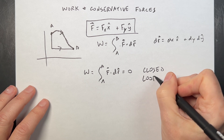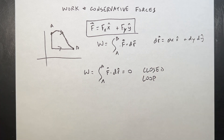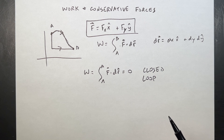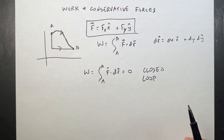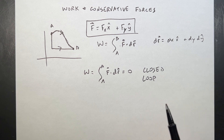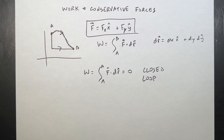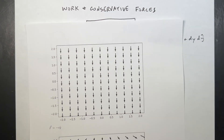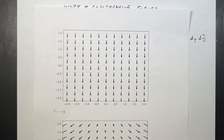This is where the loop rule comes from in electric circuits — the electric field is conservative, so the voltages around a closed loop is zero. So let's look at some fields and see if we can estimate whether they're conservative or not. Then we'll come up with a test for conservativeness and check that.